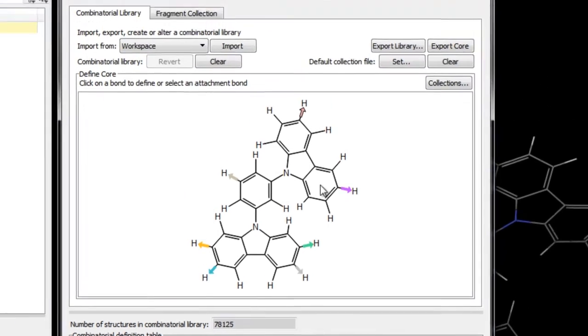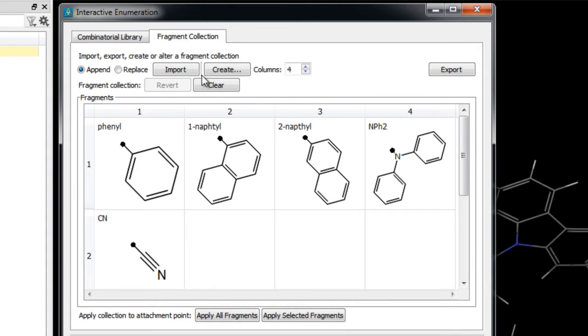We can quickly take a look at the fragment collection tab to view these fragments, again each of which is commonly found in the OLED chemical space.